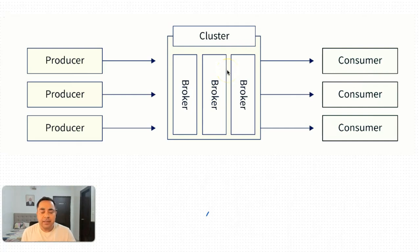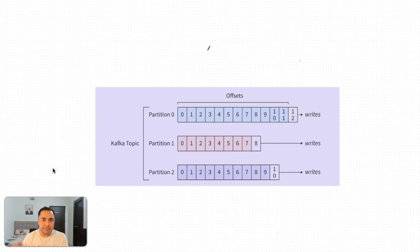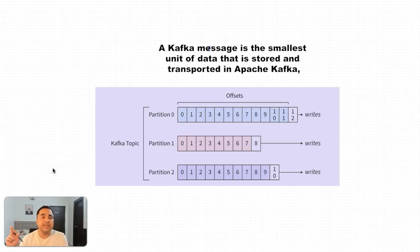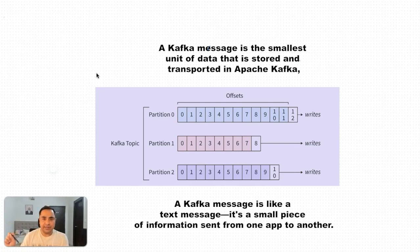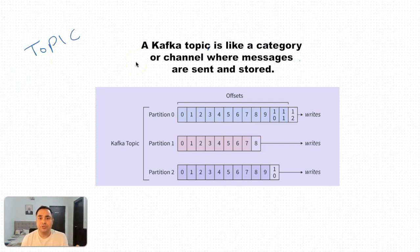Whenever we are publishing or reading something in Kafka, we talk in terms of messages. A message is a single record or event — for example, when a user uploads something, an event gets triggered; that's a message for Kafka. When a user signs up, that's again an event and a message. When we club similar types of messages or events together, we call it a Topic. Whenever a Kafka producer has to write data, it writes into a topic, and when a consumer reads data, it reads from a topic.